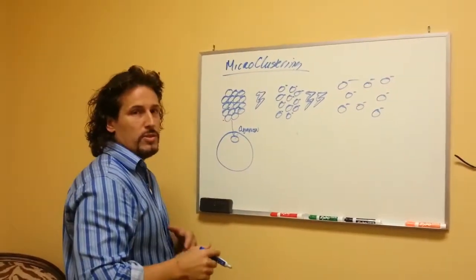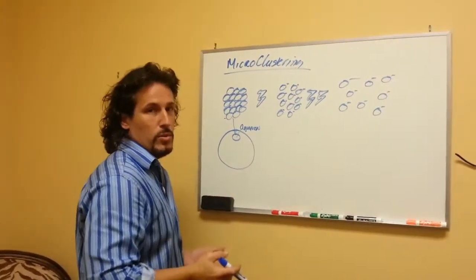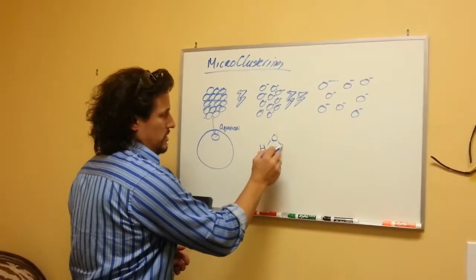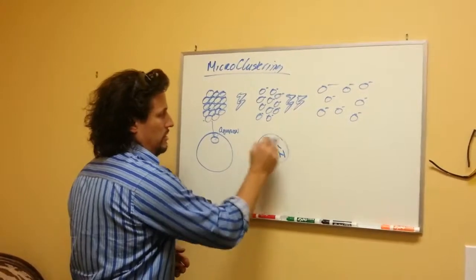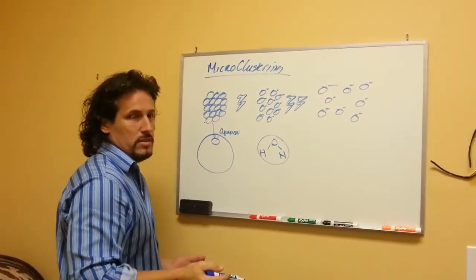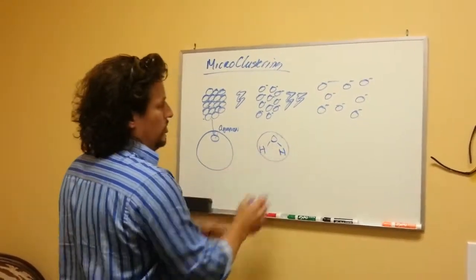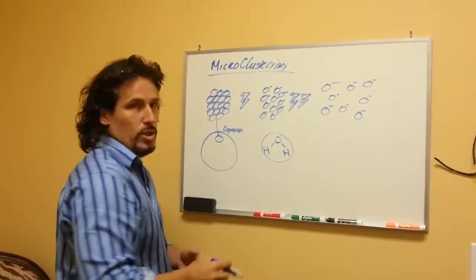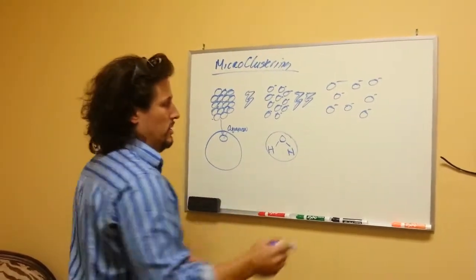People talk about micro-clustering like it's molecular bonds holding water molecules together. A water molecule is that only. If you bond or create any other bonds of water molecules together, you get something altogether different.